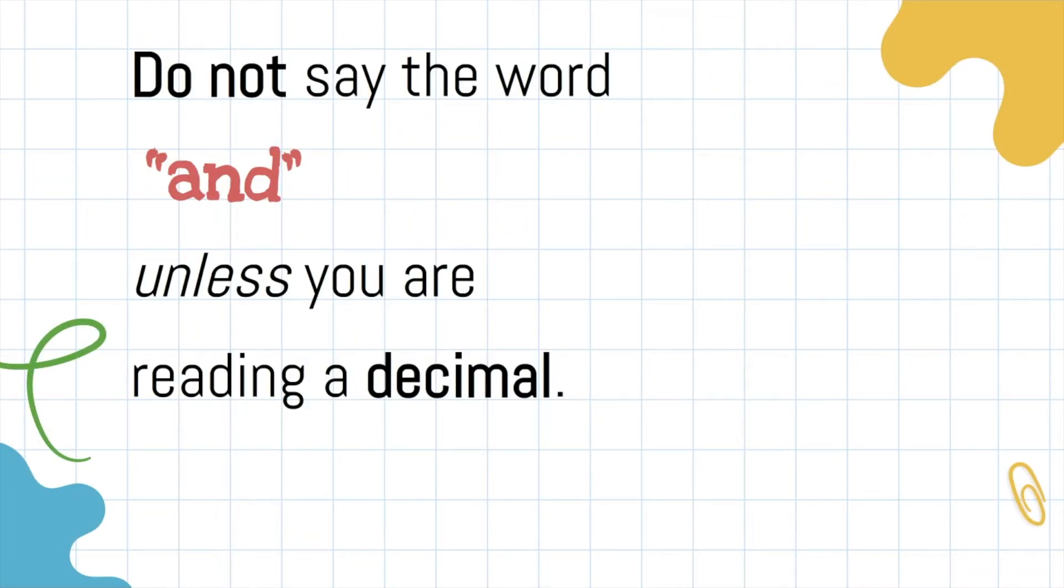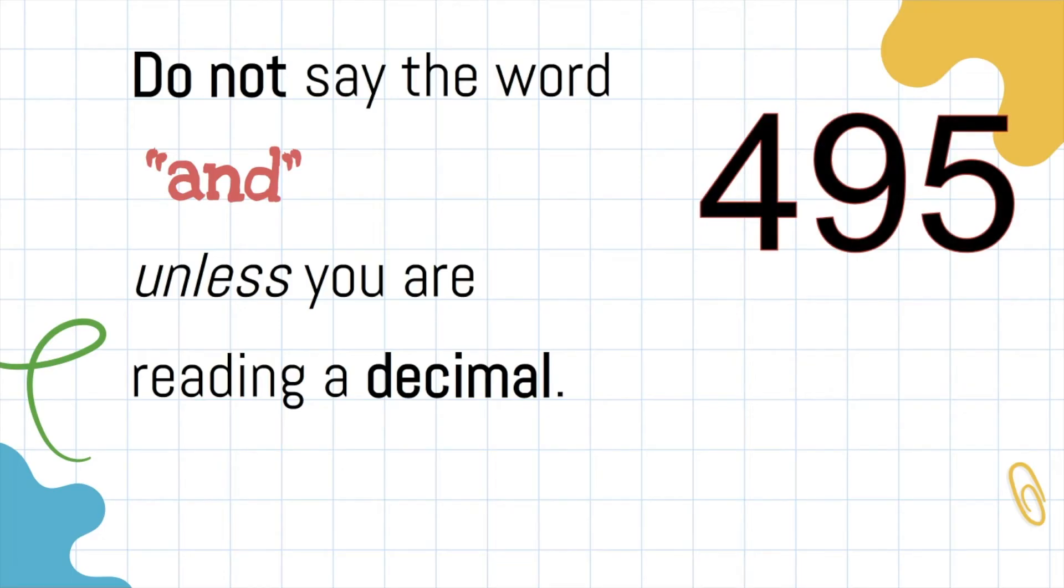When you're saying or reading a number, do not use the word and unless you're reading a decimal. So for example, this number right here, that's 495. There is no and, just 495.